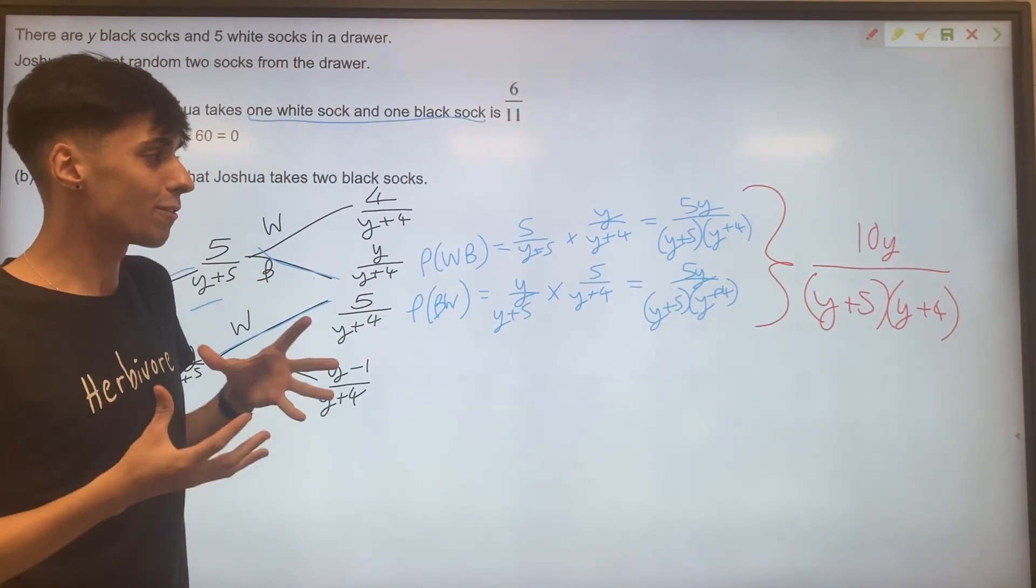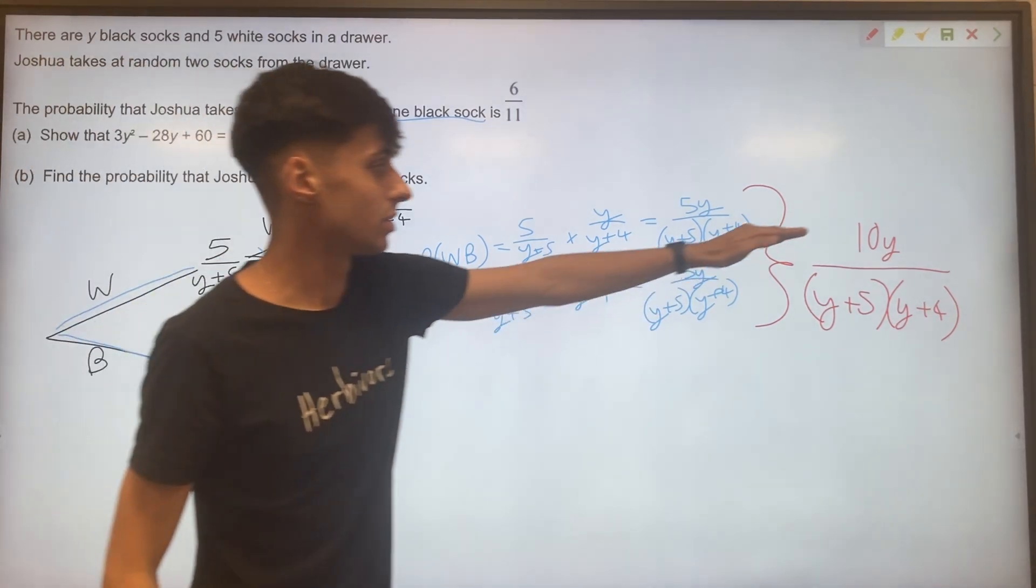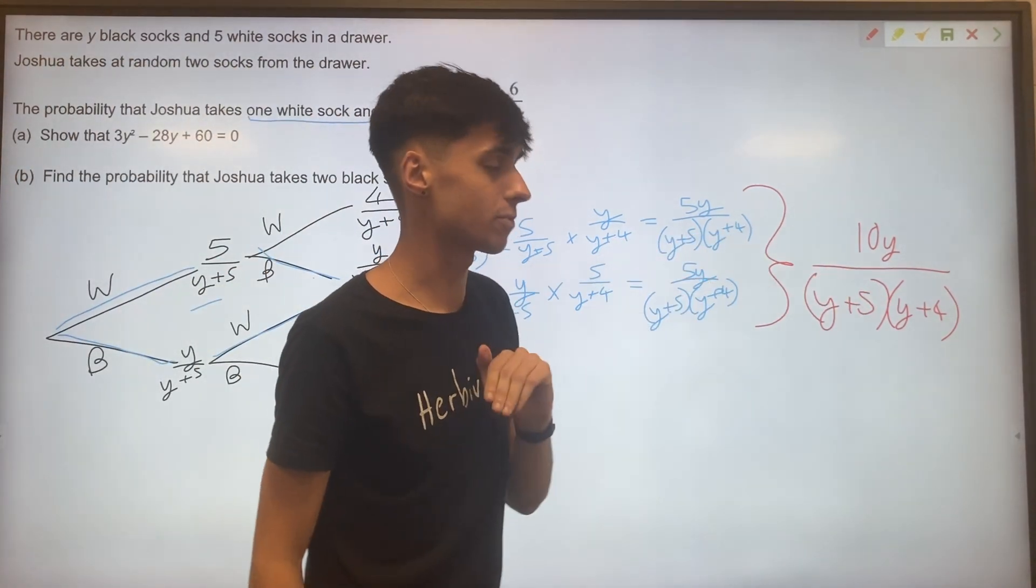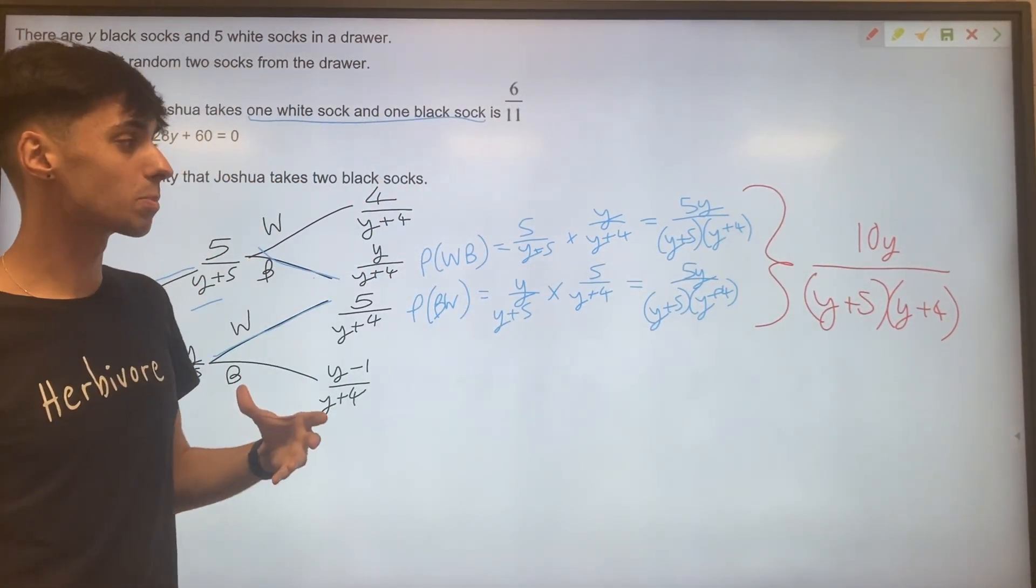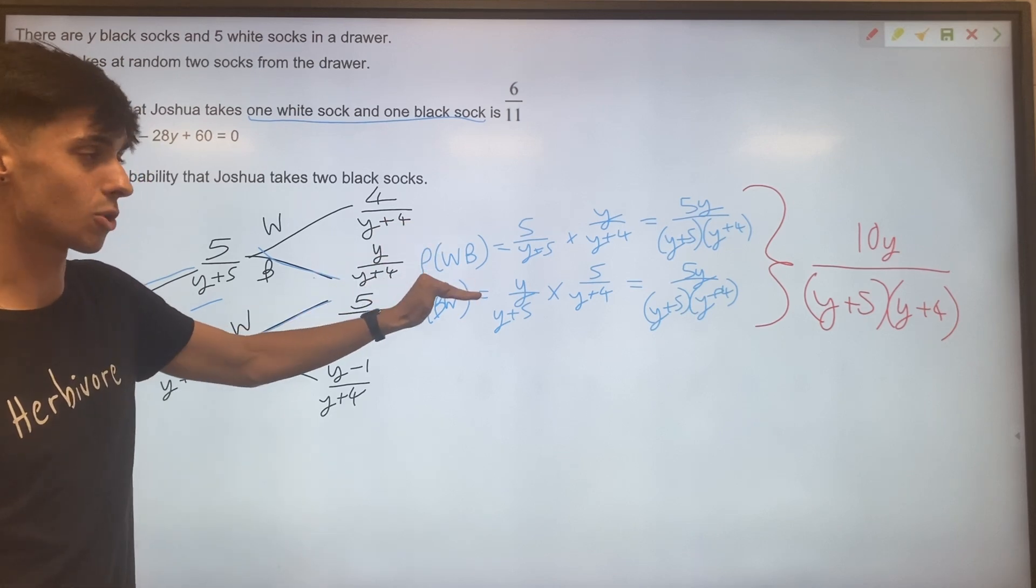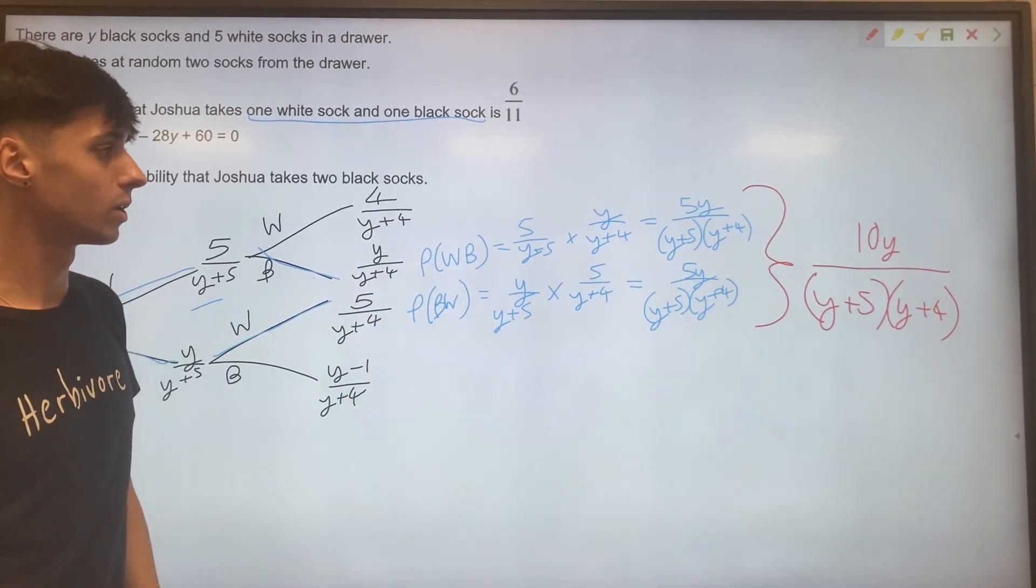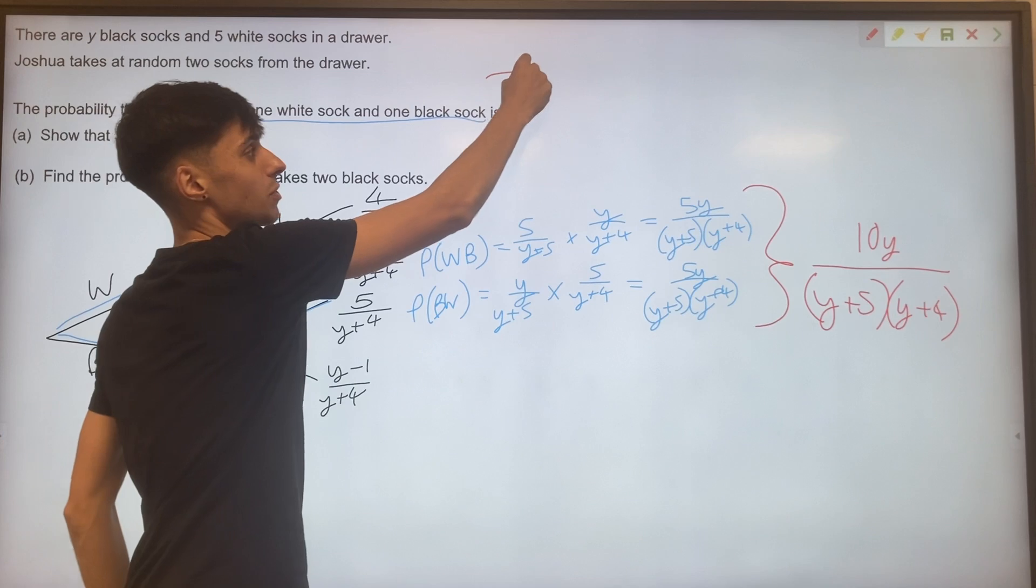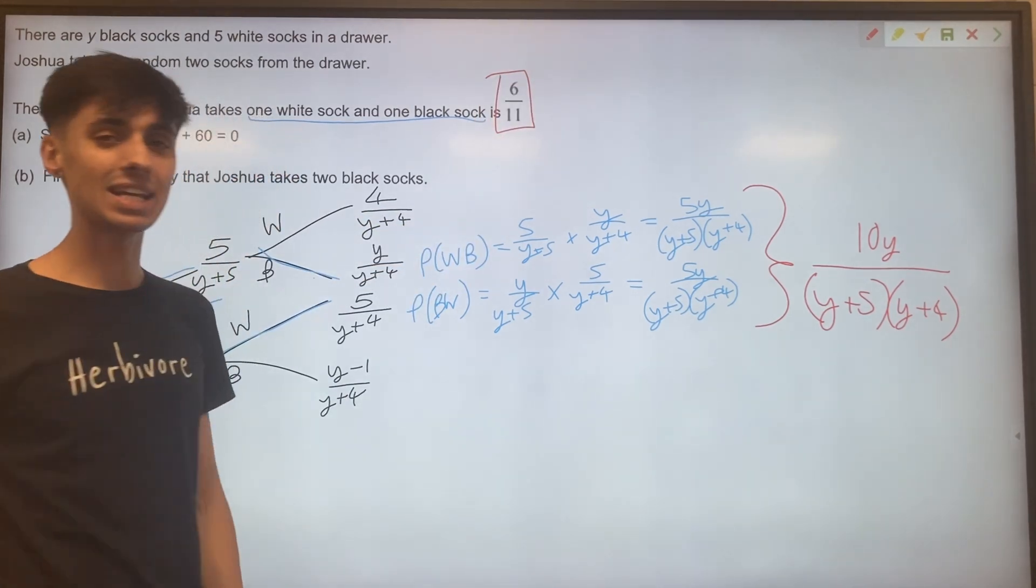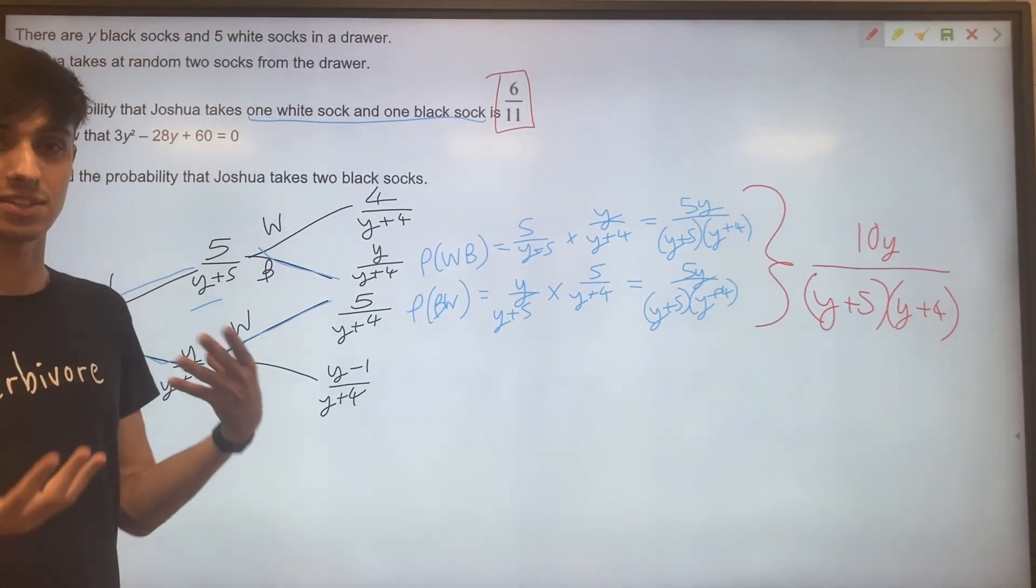We very effectively used our tree diagram then to get 10y over y plus 5 brackets y plus four. That is the probability of one white sock and one black sock in any order. So now we need to combine this with the number that we were given, 6 out of 11, and see what happens.